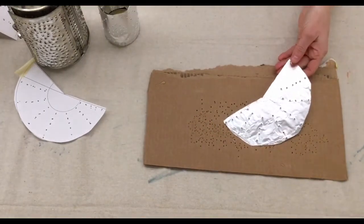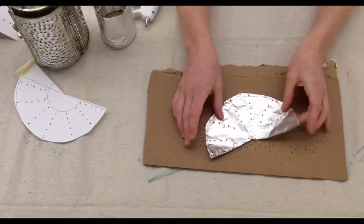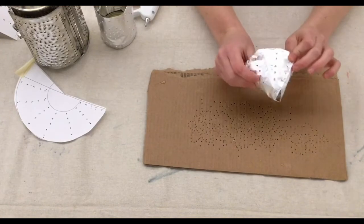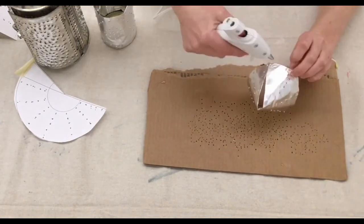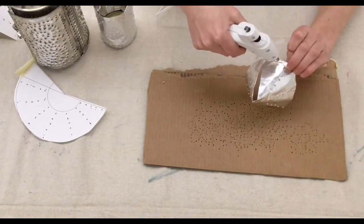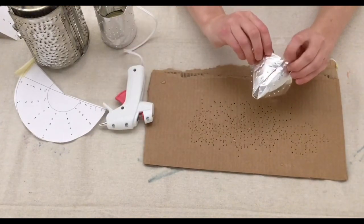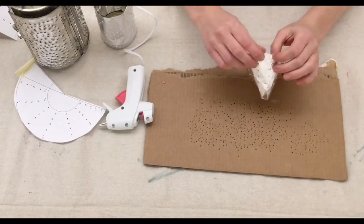The next thing we need to do is fold this into a cone shape. Now when I fold this into a cone, I want to make sure that the folded side is on the inside and the perforations are facing outwards. Then I'm just going to take my hot glue gun and lay down a little glue on the seam, which I'm going to overlap and then pinch closed.